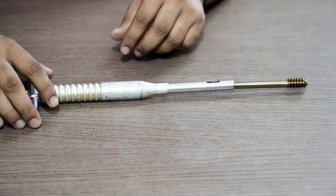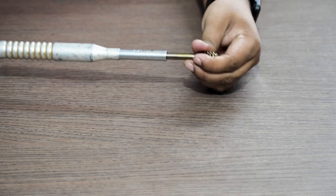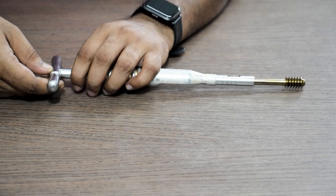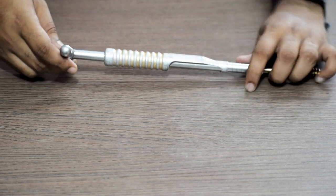And then we remove the lag screw slowly. We use the guide shaft so that the lag screw does not get stuck inside anywhere and it comes out smoothly.